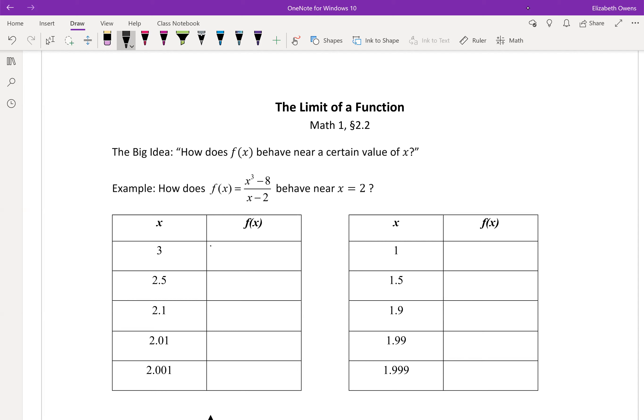So like plugging in 3 for instance: 3 cubed minus 8 over 3 minus 2. All right, we would get 19 for that, and that's one of the few that we can do by hand.